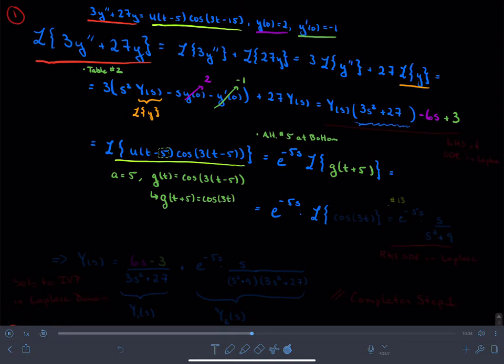So this is multiplying, or this now gives me the Laplace transform of cosine 3t, which is equal to e to the negative 5 s times the Laplace transform of cosine 3t.